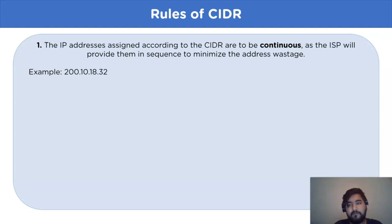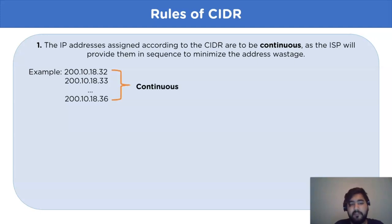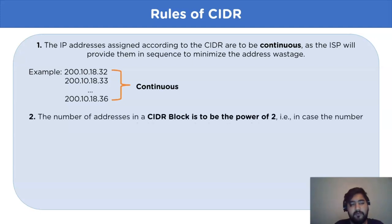Rule one: IP addresses assigned according to CIDR are to be continuous, as the ISP will provide them in a sequence to minimize address wastage. For example, if we have an IP address 200.10.18.32, then the addressing will take place as 200.10.18.33, and moving on to the nth position. This proves that IP addresses are assigned continuously.